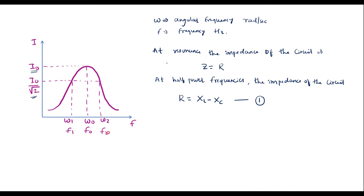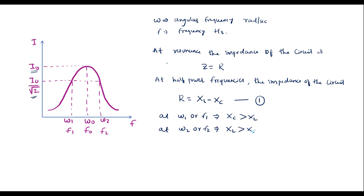ω2 or F2 is known as the upper cutoff frequency. At ω1 or F1, in the series RLC circuit, the capacitive reactance XC is greater than XL. Similarly, at ω2 or F2 (the upper cutoff frequency), inductive reactance XL is greater than XC. We know that XL = ωL and XC = 1/(ωC).